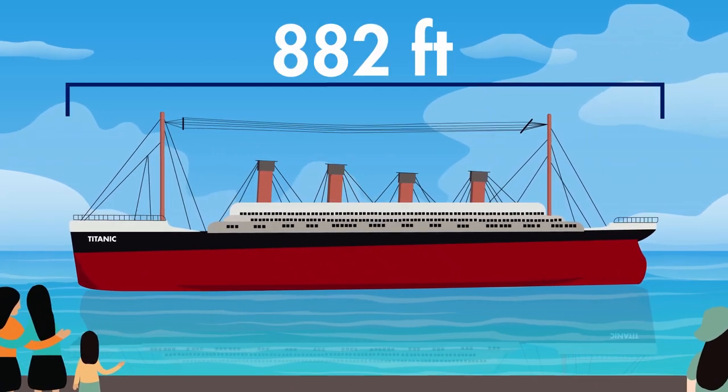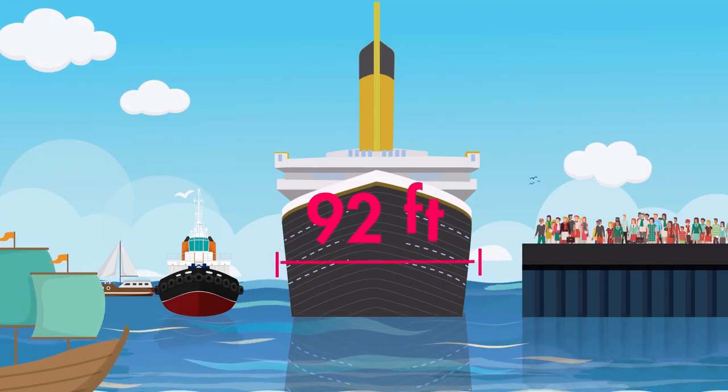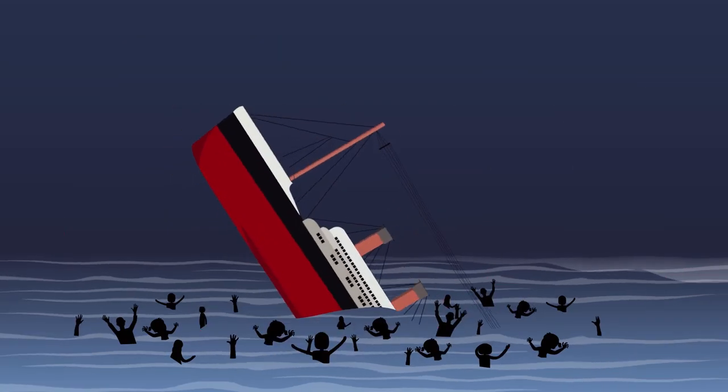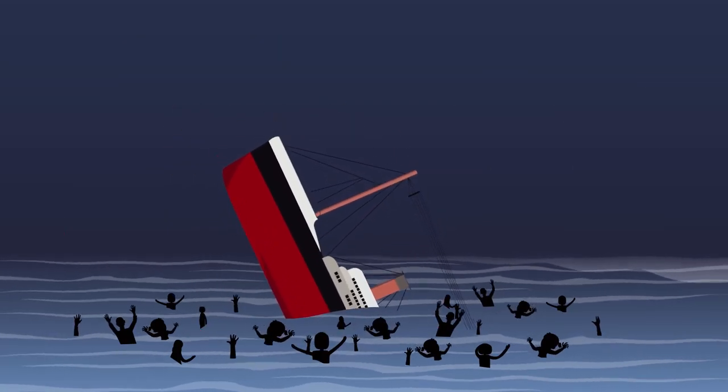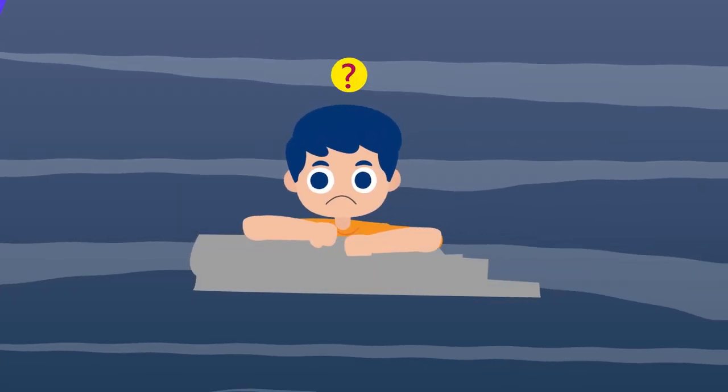Ever wonder how an 882 foot tall, 92 foot wide naval vessel nicknamed the Unsinkable ended up sinking and taking roughly two-thirds of its passengers with it? Well, you're in luck.